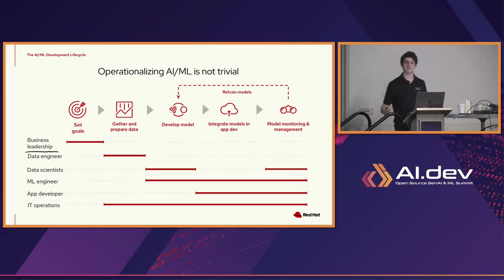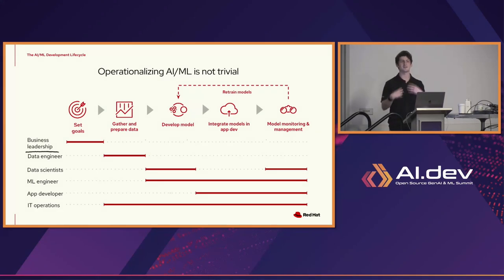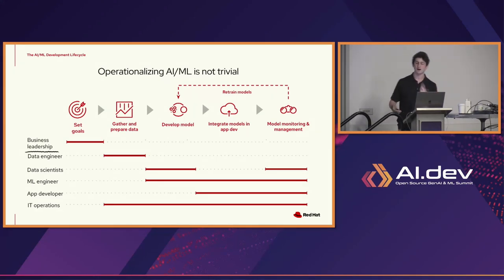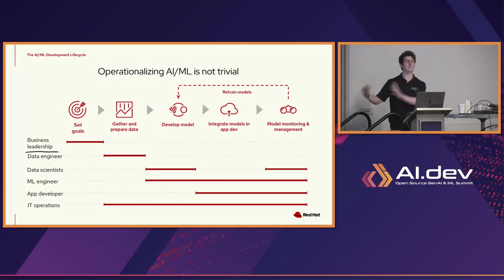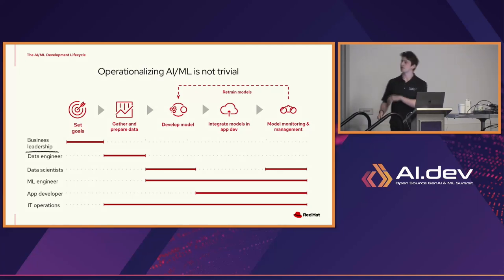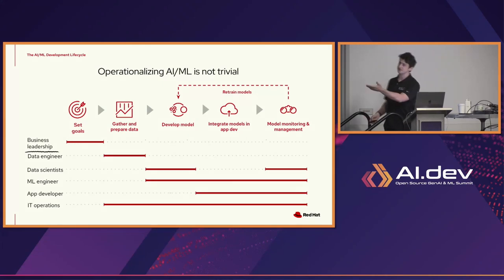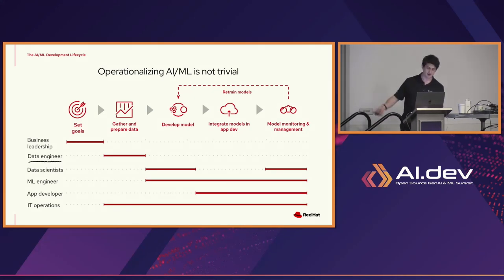That's a huge barrier for adoption in these industries. It's not the Googles and Microsofts with money to throw at this space — it's the average company that has to put in all this work just to operationalize a model and get that final output, which is this AI-infused application. These different personas need to interact — business leadership defines the goals, then the data engineer gathers and prepares the data, with many considerations around storage, whether S3 buckets or on-premises.